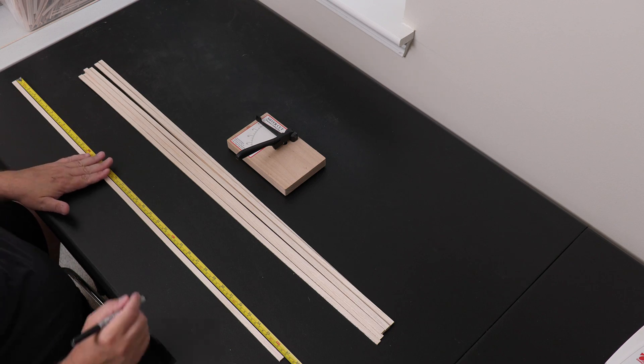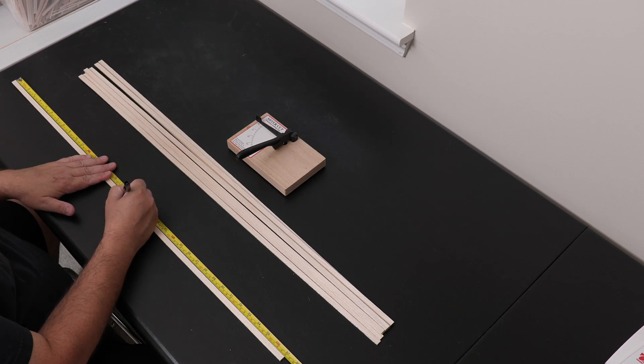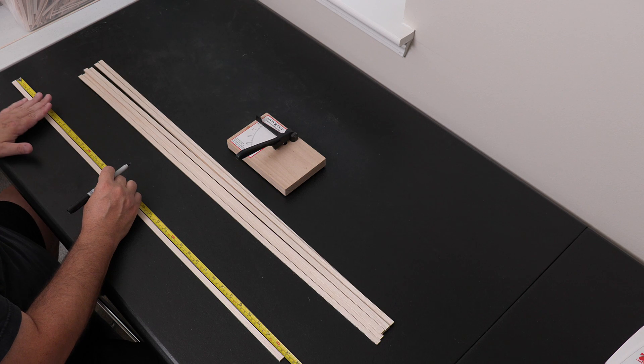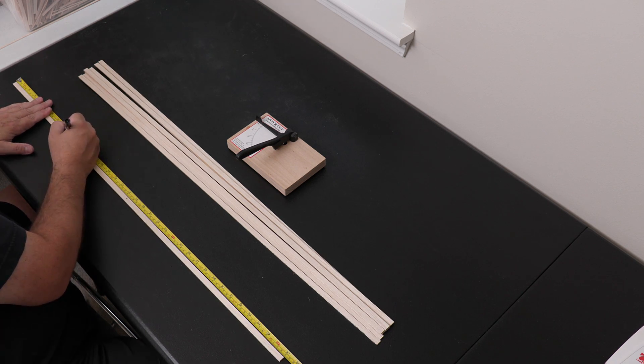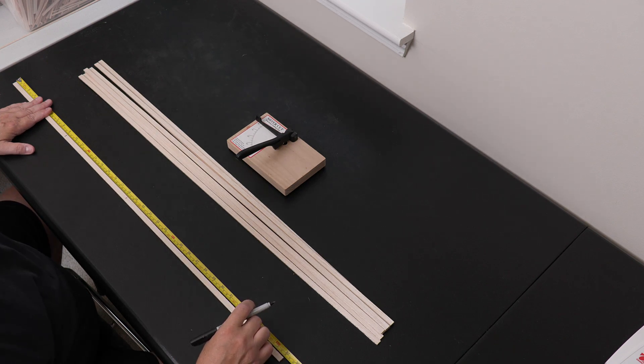Now that all the strips are cut, I need to cut them into 23.5 centimeter segments. I like to mark a single strip using a tape measure or ruler and then use that as a reference to mark all the rest of the pieces.